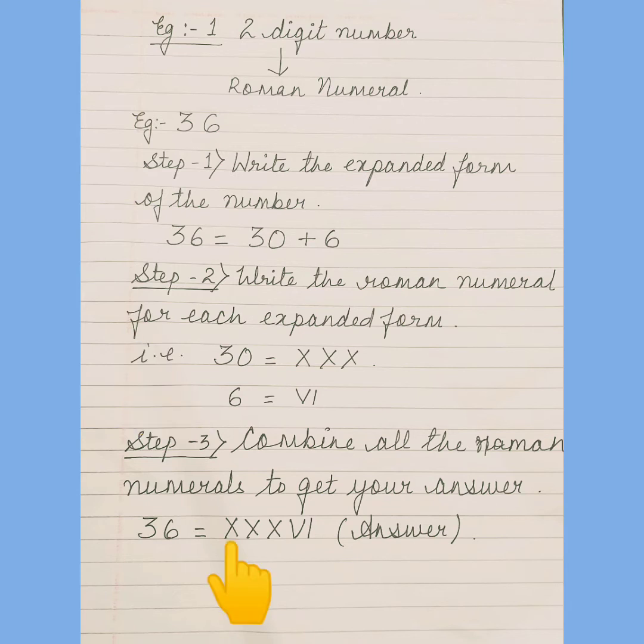Step number 3: combine all the Roman numerals to get your answer. So 36 is equal to XXXVI.